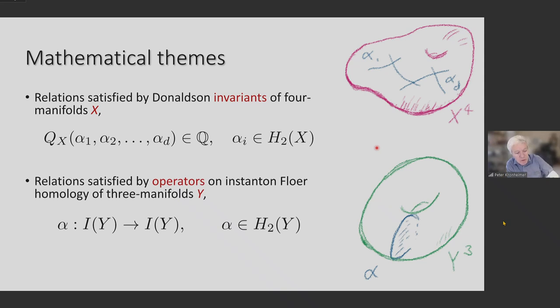A viewpoint that was sort of present in our work in the 90s only sort of partially, but is perhaps the more modern way to think about these things is to think not directly about the invariants of four manifolds, but the related Floer homology of three manifolds, the instanton Floer homology. And to think not about the Donaldson invariants, but the operators on Floer homology. So here, Y is a three manifold, alpha is a two dimensional class in Y. And alpha defines an endomorphism of the instanton Floer homology. And we can ask for what relations this operator satisfies in particular, what's its characteristic polynomial? What are its eigenvalues?